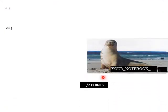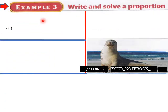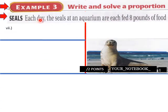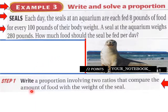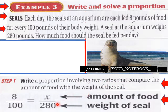Page one of today's lesson is a notebook entry. Write and solve a proportion: each day the seals at an aquarium are fed 8 pounds of food for every 100 pounds of their body weight. A seal at the aquarium weighs 280 pounds. How much food should the seal be fed per day? Step one: write a proportion involving two ratios that compare the amount of food with the weight of the seal. So we have 8 over 100 equals x over 280.